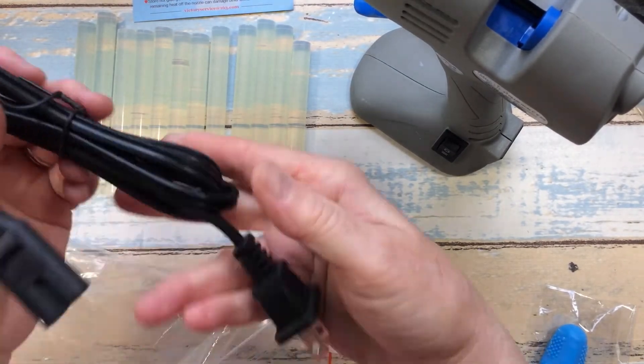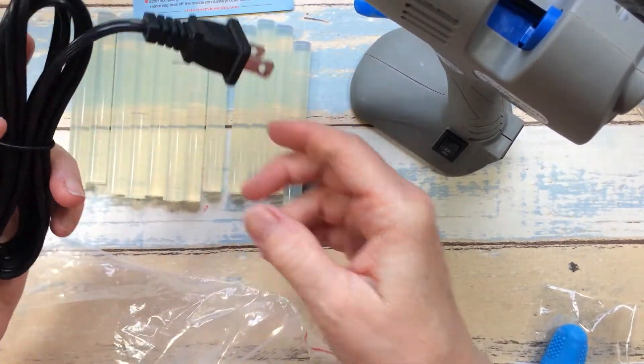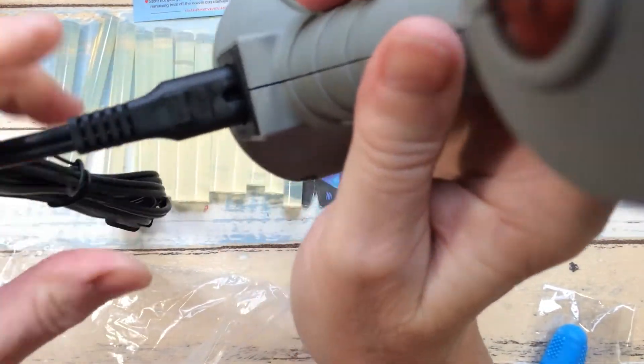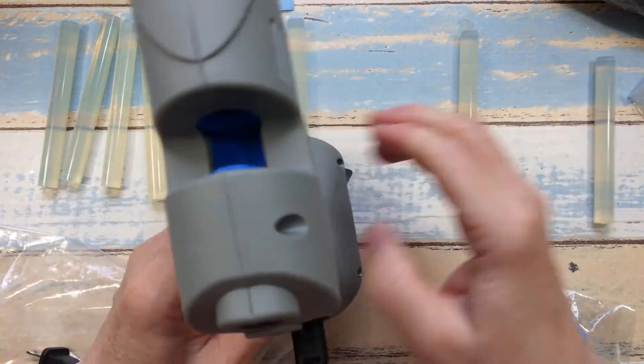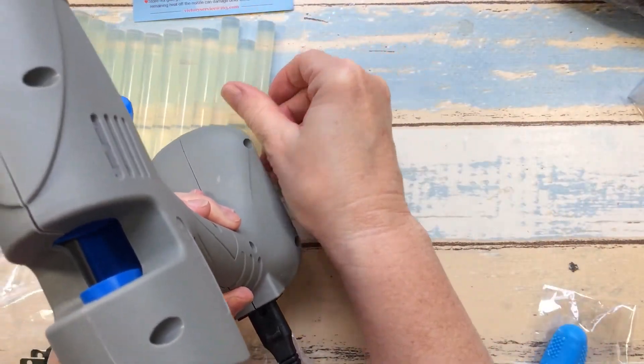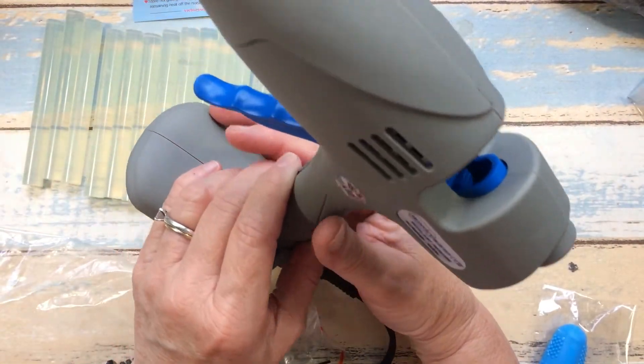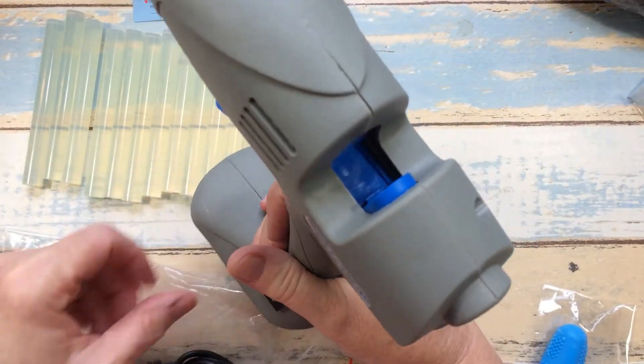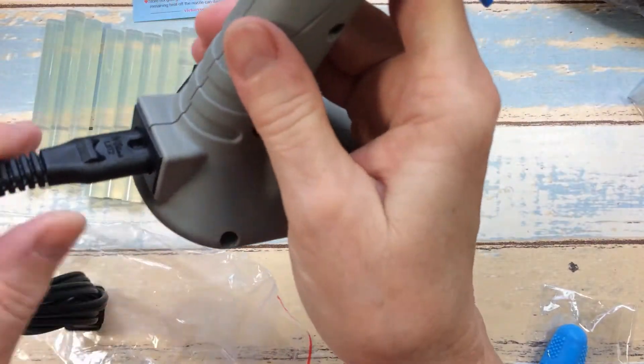And then the last thing in the bag, of course, is your glue gun electrical cord. Now I do know you can plug this glue gun in and then it'll heat up. I believe it said two to three minutes - I'm not sure on that, but I will do a full review by using the glue gun.